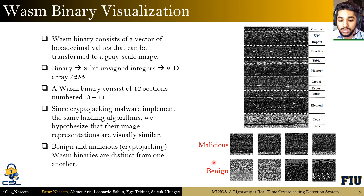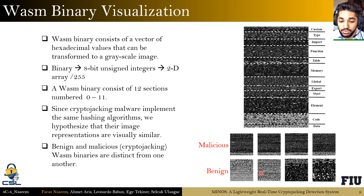If you look at the image at the bottom right, you can see that our hypothesis was correct. The first row of images consists of cryptojacking malware samples and the second row consists of benign samples. The cryptojacking malware samples all look almost identical or very similar to each other, while the benign samples are all unique from each other and easily distinguishable from cryptojacking malware samples.